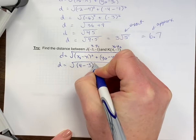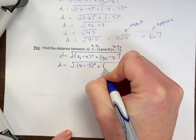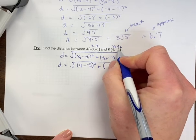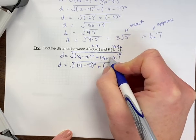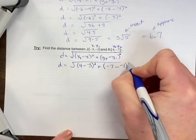Plus, open brackets, the second y, y₂, is negative seven, minus - that's part of that formula - y₁ is negative one, close the brackets and square.